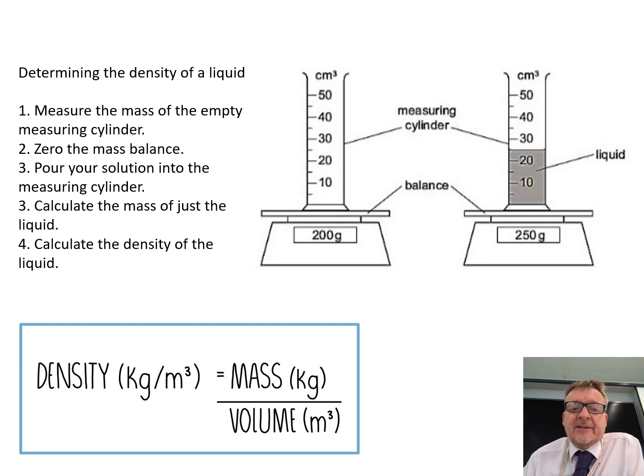Then, calculating the density of a liquid. You're doing exactly the same kind of style thing, except there's one extra step. Measure the mass of the empty measuring cylinder. There's your measuring cylinder. You put it onto the balance, and you can either record it down as two hundred grams, or if you press the zero, it takes it back to zero grams.